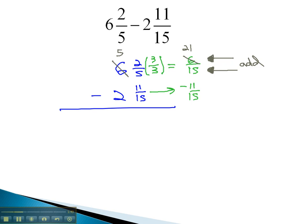We borrowed one whole, which was 15 fifteenths, added to that the 6 fifteenths, which gave us 21 fifteenths.